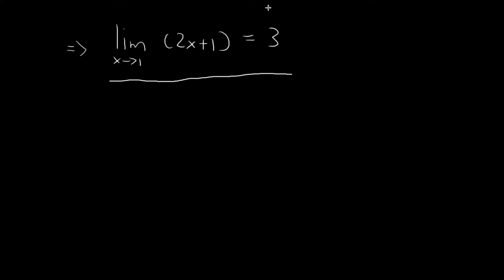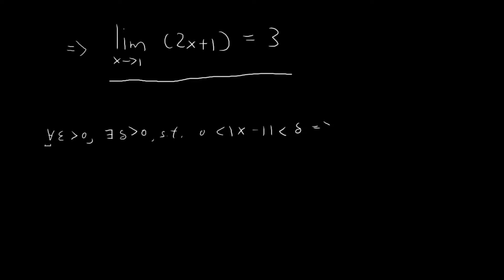For this statement, the epsilon-delta definition that I would need to establish is that for all values of epsilon — this symbol means 'for all' — so for all values of epsilon larger than 0, there exists — this symbol means 'there exists' — a value delta larger than 0, such that if your values of x lie within a distance of delta away from 1, then this implies that 2x plus 1 lies within a distance of epsilon away from the value 3.